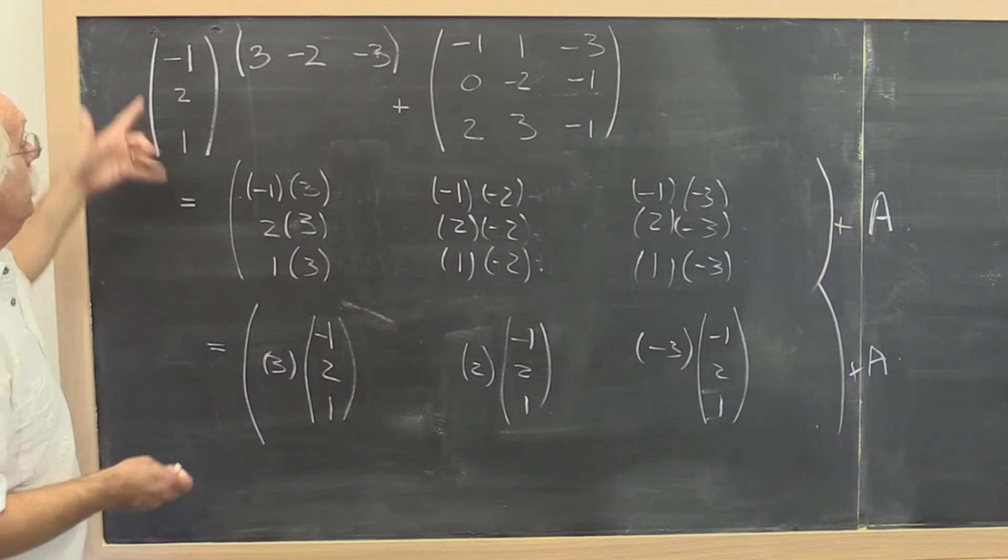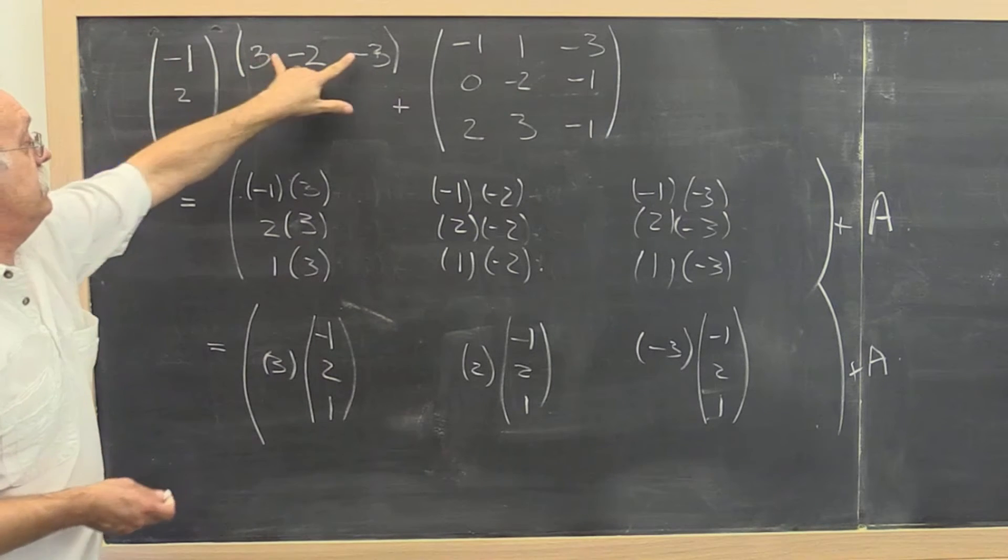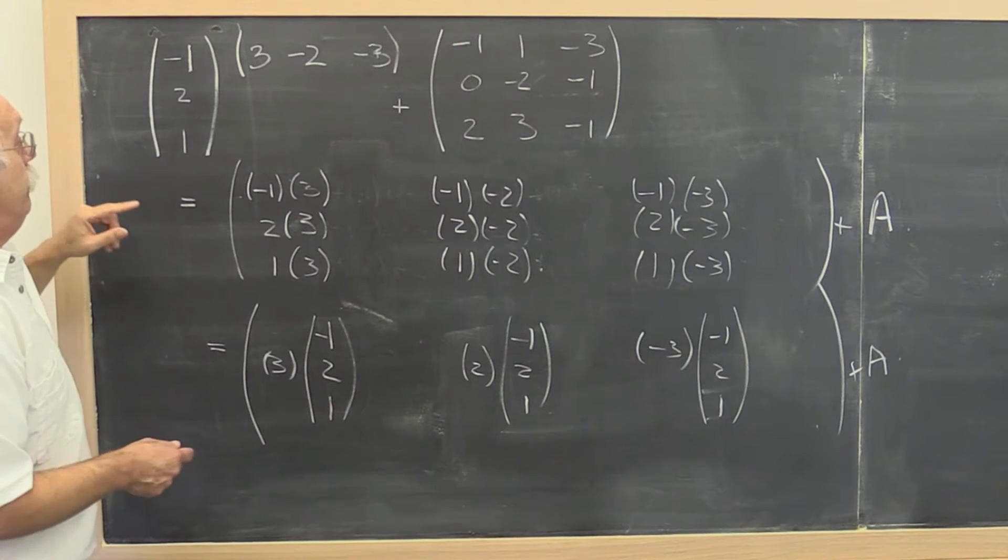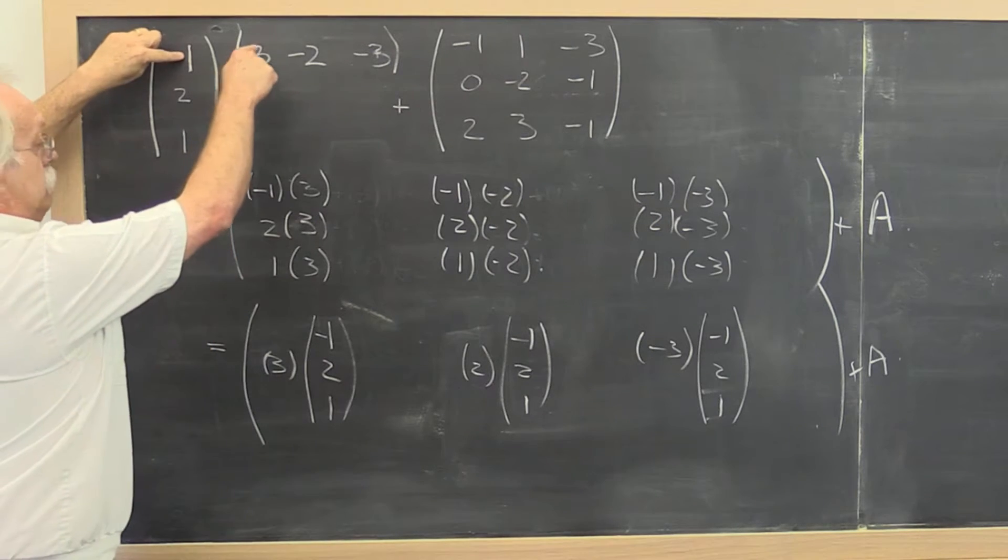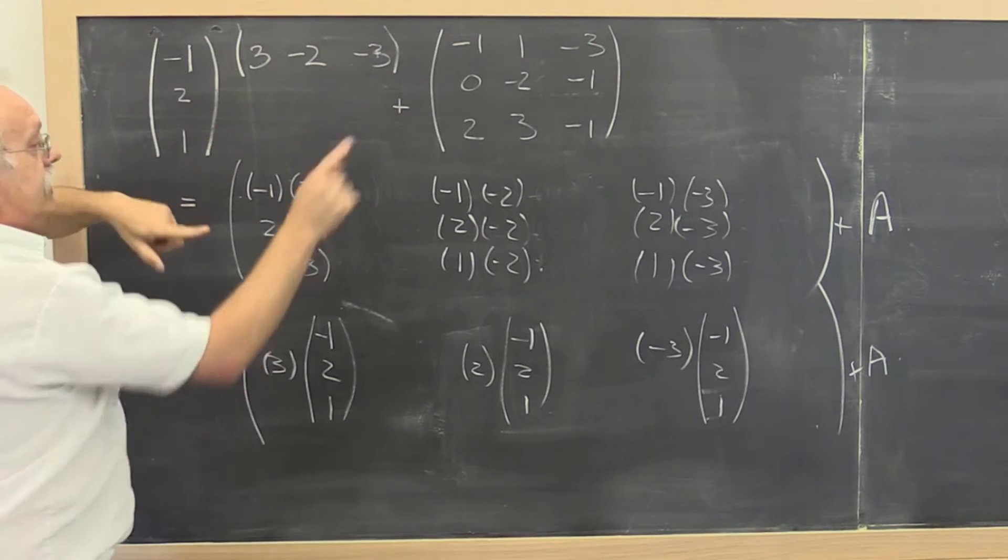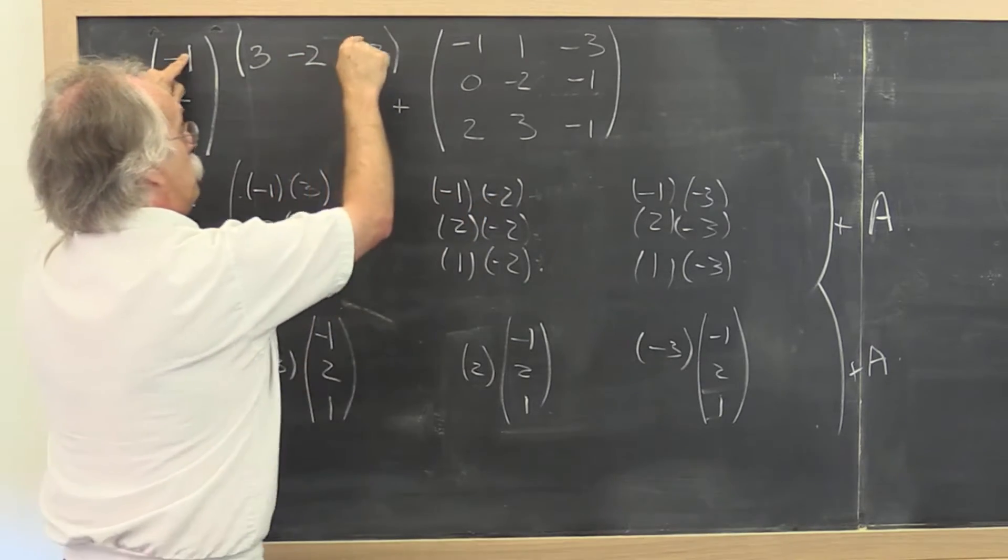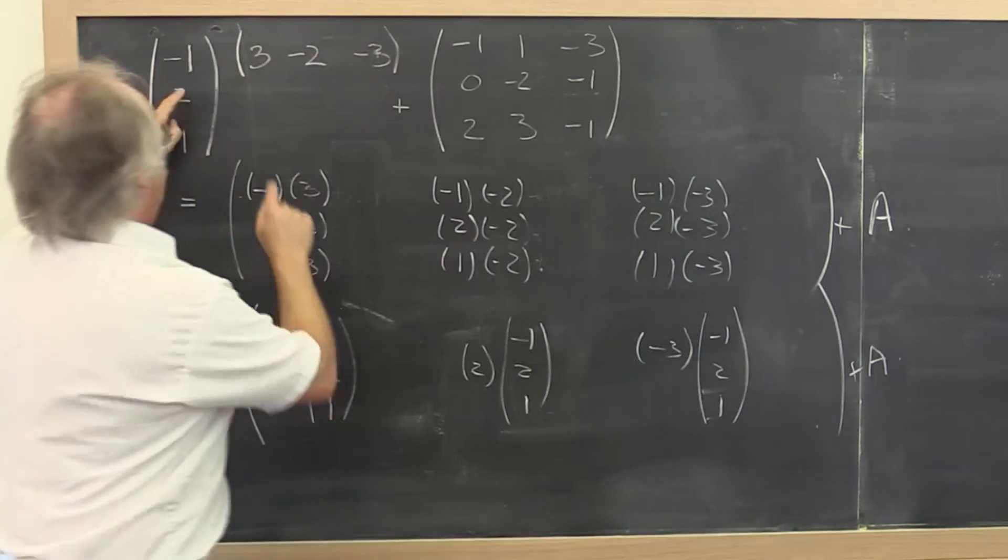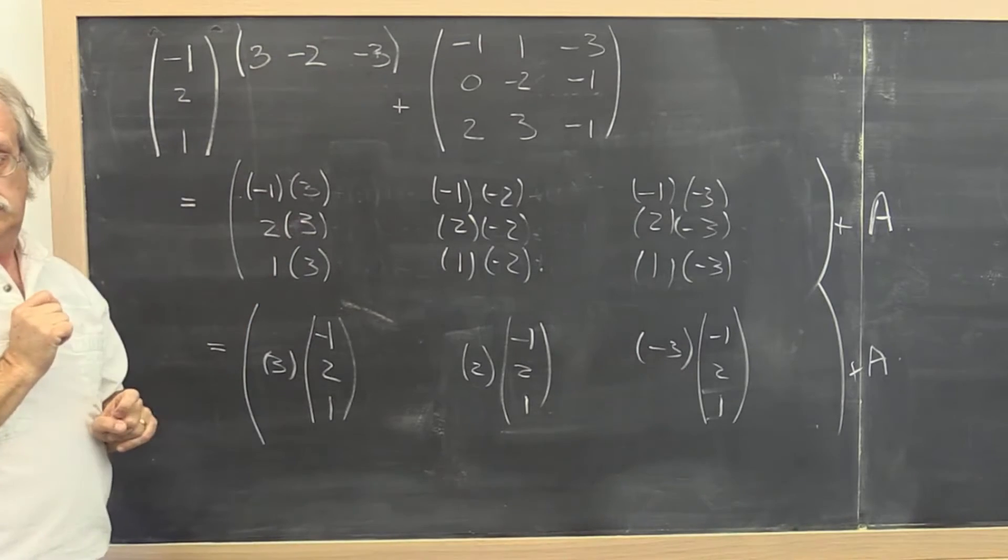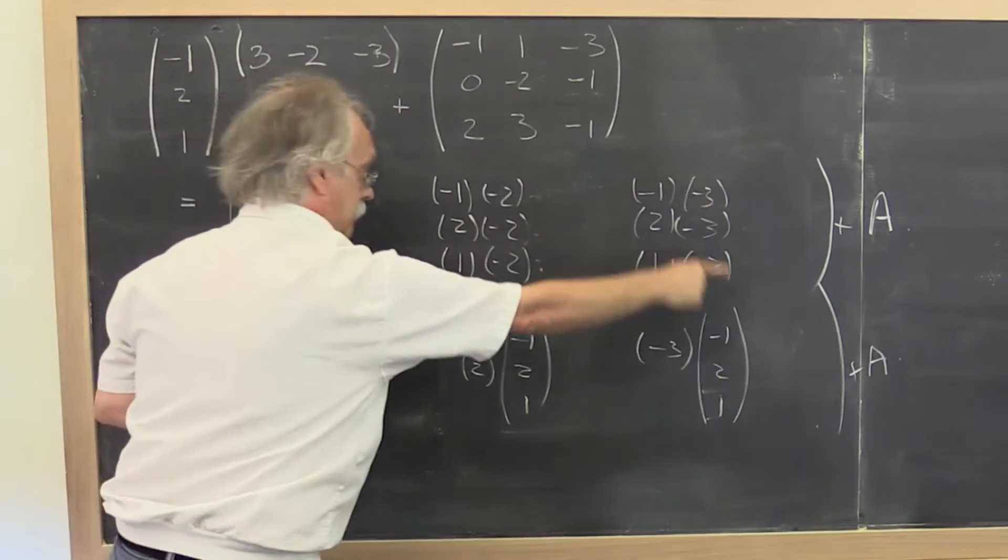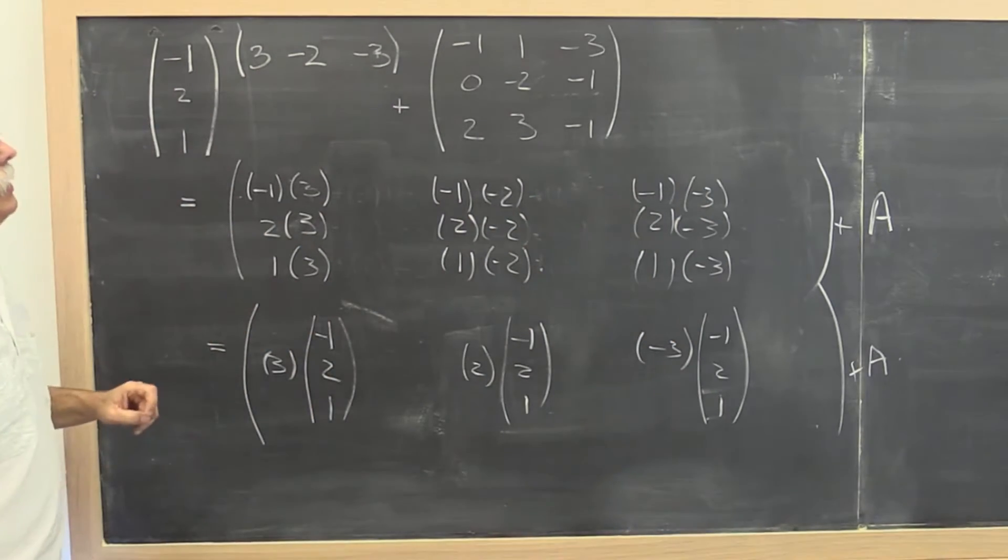And how do you compute it? Well if you think of this as a matrix and this is a matrix, then the first element would be this times that. The second element in the matrix would be this times that. The third element would be this times that, and so forth. So notice that this represents a 3 by 3 matrix corresponding to the outer product.